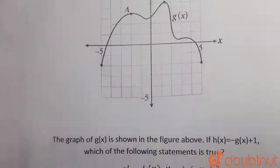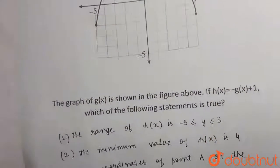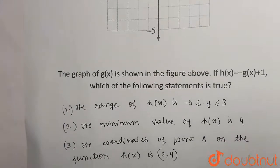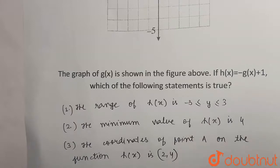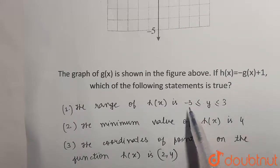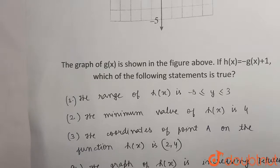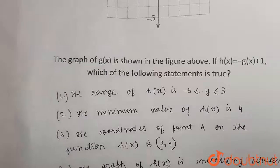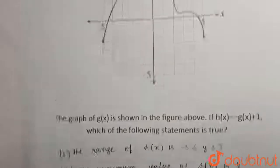So our first option is true. Now let us check the rest of the options. The minimum value of h(x) is 4 — but as we can see, the range gives a minimum of minus 3, so the minimum value of h(x) cannot be 4. Second option is automatically ruled out. Now let's move on to the third option: the coordinates of point A on the function h(x) is (2, 4).